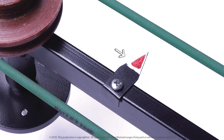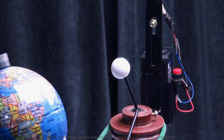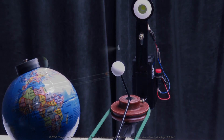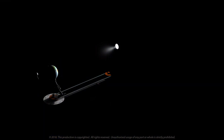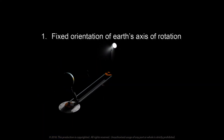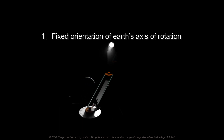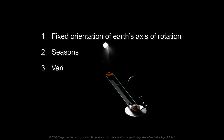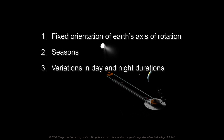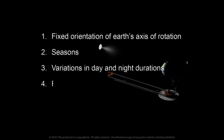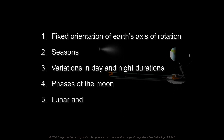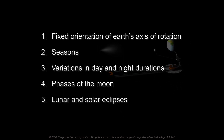This pointer indicates the direction in which the arm has to be moved. Now let's see how this model can be used to demonstrate these phenomena: 1. Fixed orientation of earth's axis of rotation. 2. Seasons. 3. Variations in day and night durations. 4. Phases of the moon. 5. Lunar and solar eclipses.